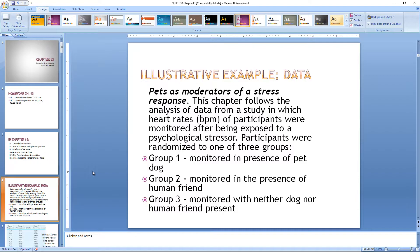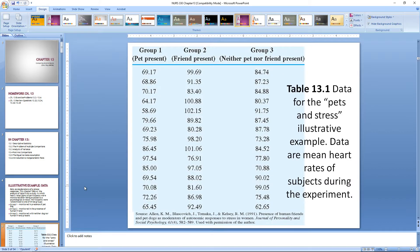Let's begin with this illustrated example: pets as moderators of stress response. This chapter follows analysis of data from a study in which heart rates or beats per minute of participants were monitored after being exposed to psychological stressors. Participants were randomized to one of three groups: Group 1 monitored in the presence of a pet dog, Group 2 in the presence of a human friend, and Group 3 with neither dog nor human friend present.